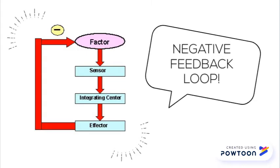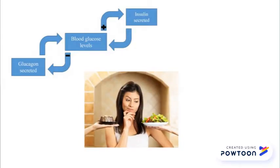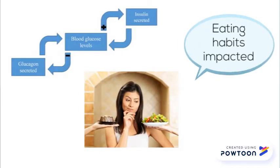When one factor of your body changes, another adjusts to maintain an equilibrium, creating a negative feedback loop. There are several instances where this happens in digestion. If your blood glucose is too low or too high, your eating habits will be impacted. The same goes for if your brain metabolism is too low or too high — it will impact your eating.